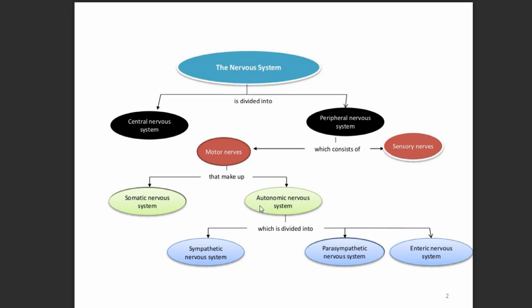The nervous system is divided into two parts: first is the central nervous system, which comprises the brain and spinal cord, and second is the peripheral nervous system, which consists of motor and sensory nerves. Motor nerves are divided into two branches: the somatic nervous system and the autonomic nervous system, which is further divided into the sympathetic, parasympathetic, and enteric nervous systems.